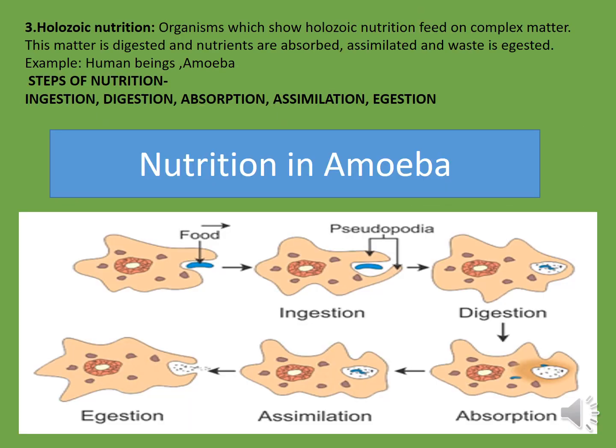The third type of heterotrophic nutrition is holozoic nutrition. In this nutrition, the organism takes in food, digests it, absorbs it, assimilates it, and at the last, the waste which is not digested is released out of the body by the process of egestion. Examples are human beings and amoeba. All the organisms in which these five steps — ingestion, digestion, absorption, assimilation, and egestion — take place have holozoic nutrition.